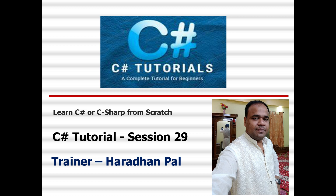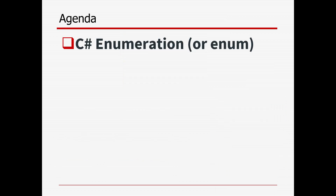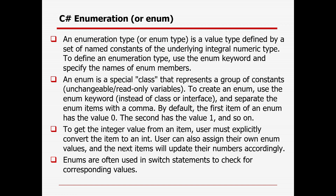Welcome back to C# tutorial session 29. In today's session you will learn about C# enumeration or enum. An enumeration type or enum type is a value type defined by a set of named constants of the underlying integral numeric type. To define an enumeration type, you need to use the enum keyword. Enum is a special class that represents a group of constants which are unchangeable or read-only variables. To create an enum, use the enum keyword instead of class or interface.